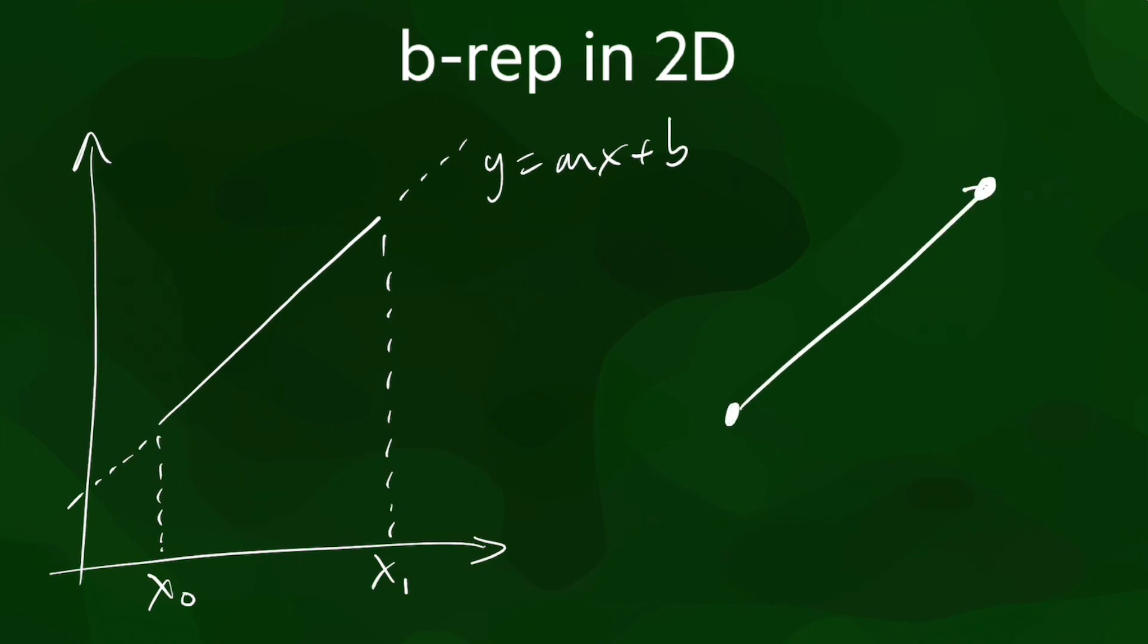Instead, the most common representations for line segments use boundary representation. We therefore represent a line segment using the coordinates of its two endpoints, which are its boundary.